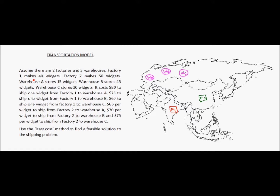Factory one makes 40 widgets, so the supply capacity at factory one is 40 widgets per day. Factory two makes 50 widgets, so the supply capacity at factory two is 50 widgets per day. Warehouse A can store 15 widgets, so the demand at warehouse A is 15 widgets per day. Warehouse B can store 45 widgets, so demand at B is 45 widgets per day. Warehouse C can store 30 widgets, so the demand there is 30 widgets per day.